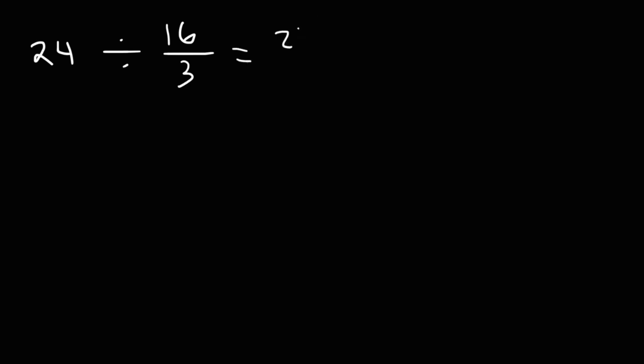So let's write 24 as 24 over 1. And then let's change division to multiplication. Now we need to find a reciprocal of the fraction 16 over 3. We could do that by simply flipping it. So that becomes 3 over 16. So that's what we now have.